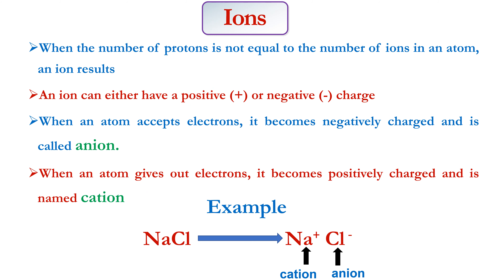An ion is formed when the number of protons in an atom is not equal to the number of electrons. An ion can either have a positive charge or a negative charge. When an atom gains electrons, it becomes negatively charged and is called an anion. When an atom gives out electrons, it becomes positively charged and is called a cation.